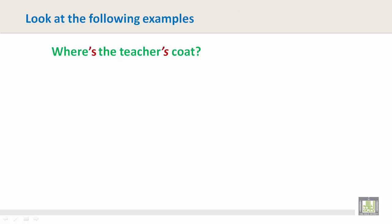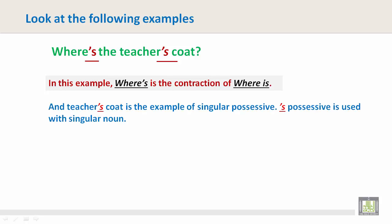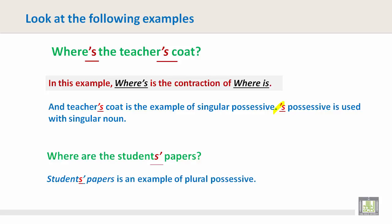Look at the following examples. Where's the teacher's coat. In this example, where's is the contraction of where is. And teacher's coat is the example of a singular possessive S. Possessive is used with singular nouns. Where are the students' papers? Students' papers is an example of plural possessive.